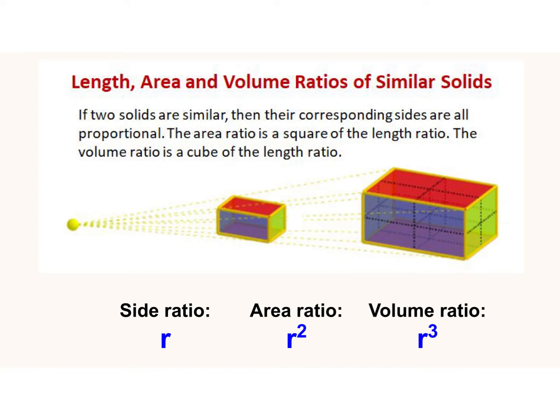So let's see if we can make sense of this property by looking at these two similar solids. Notice how the bigger prism has corresponding side lengths—in other words, the length, the width, and the height—that are twice as long as the smaller. In other words, they have a side ratio of one-half or one to two.